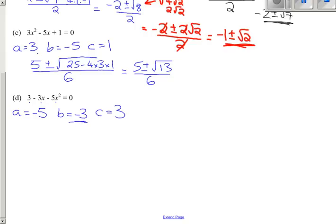Filling these numbers in, we get minus b, so that's now just 3, plus or minus the square root of b squared, that's 9 minus 4 times a times c, all divided by 2 of these.